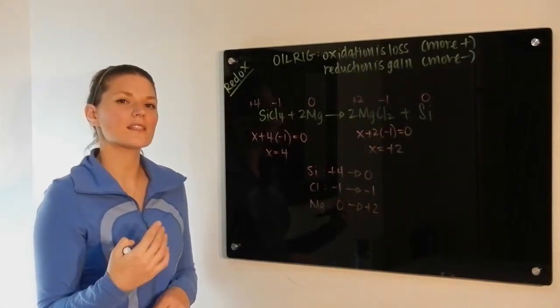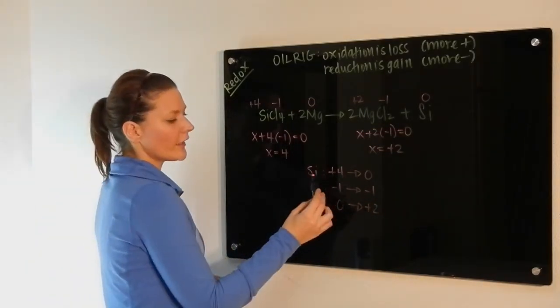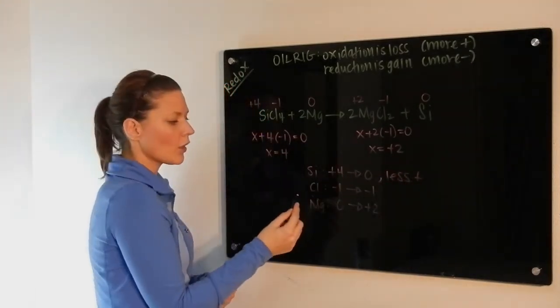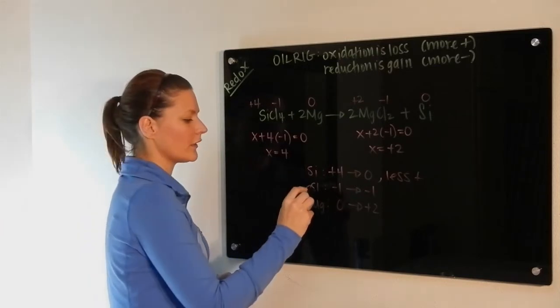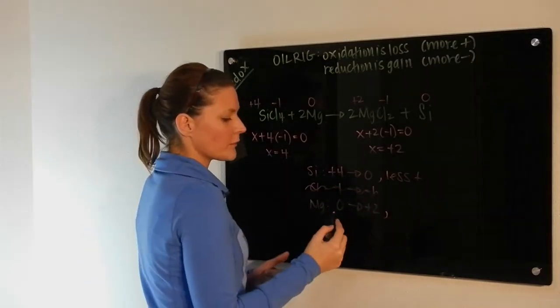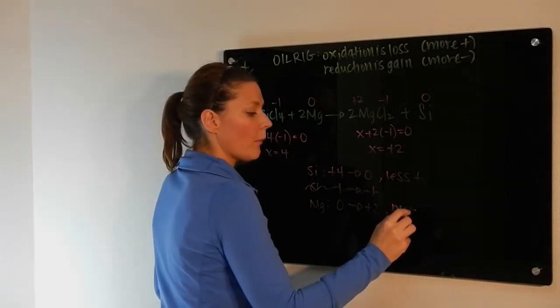We now want to see how these numbers have changed. So if we look at silicon, it got less positive. We went from plus four to zero. Chlorine, nothing happened to it, so we're really not concerned with that compound at all. Magnesium went from zero to plus two, so it got more positive.